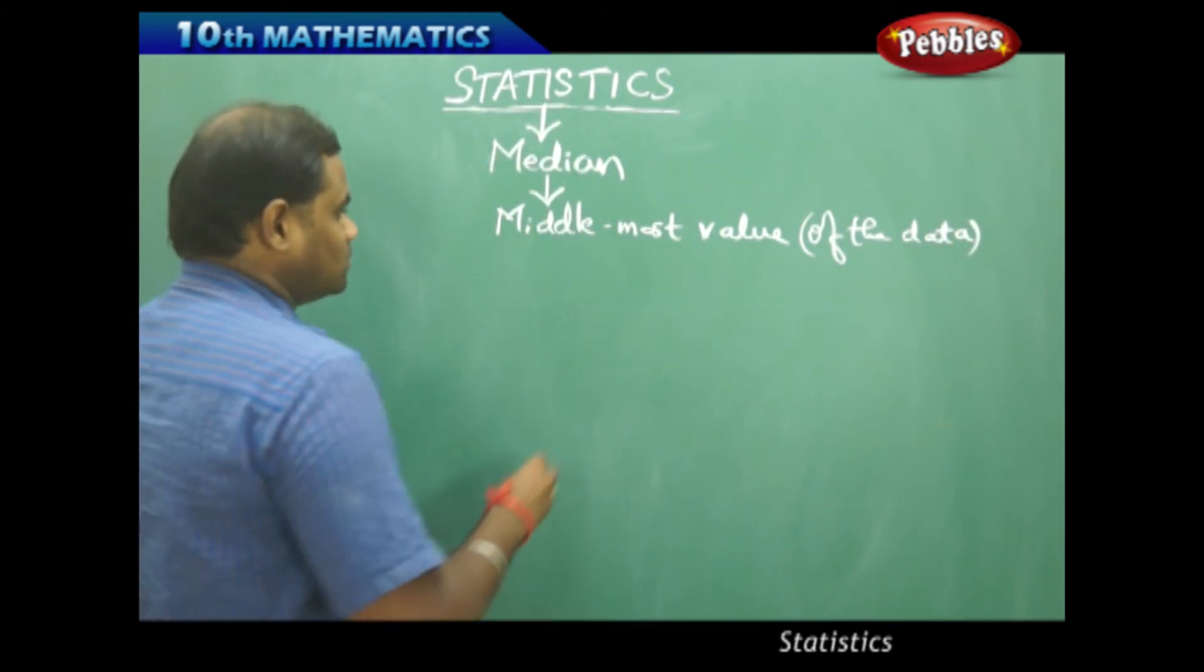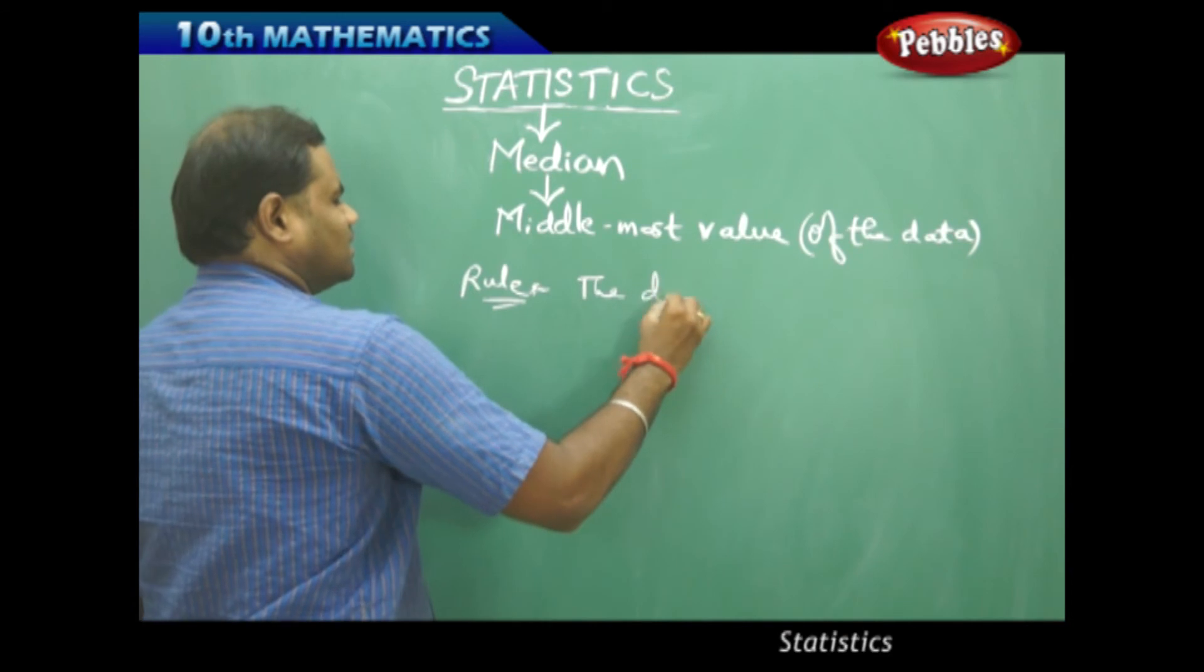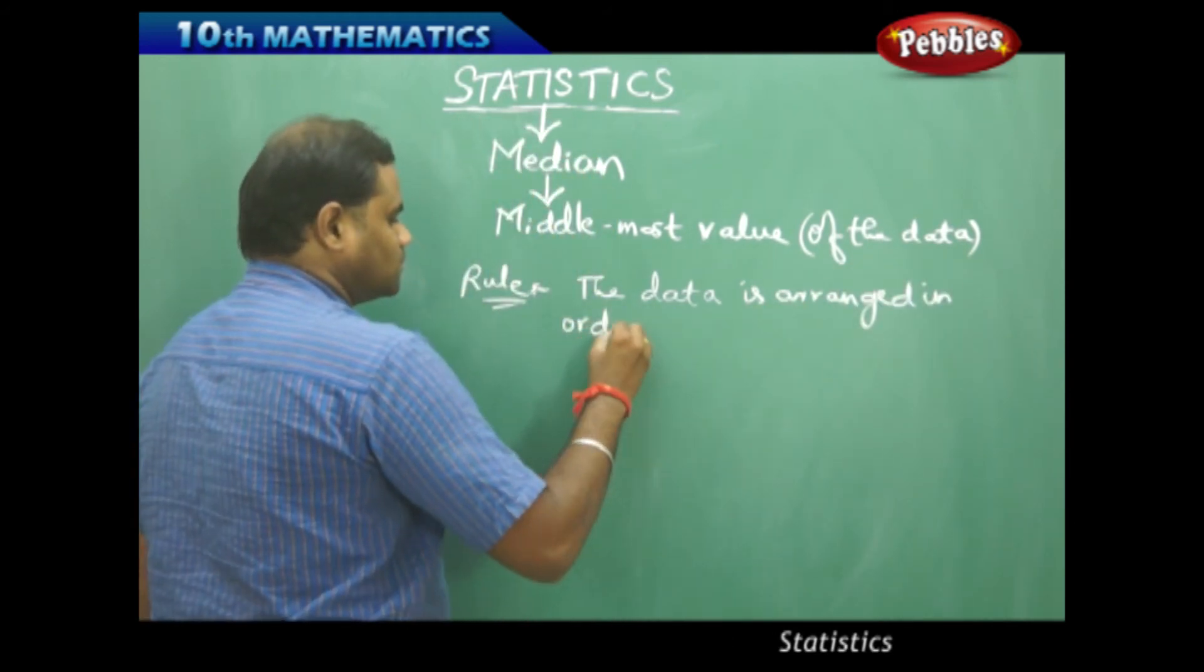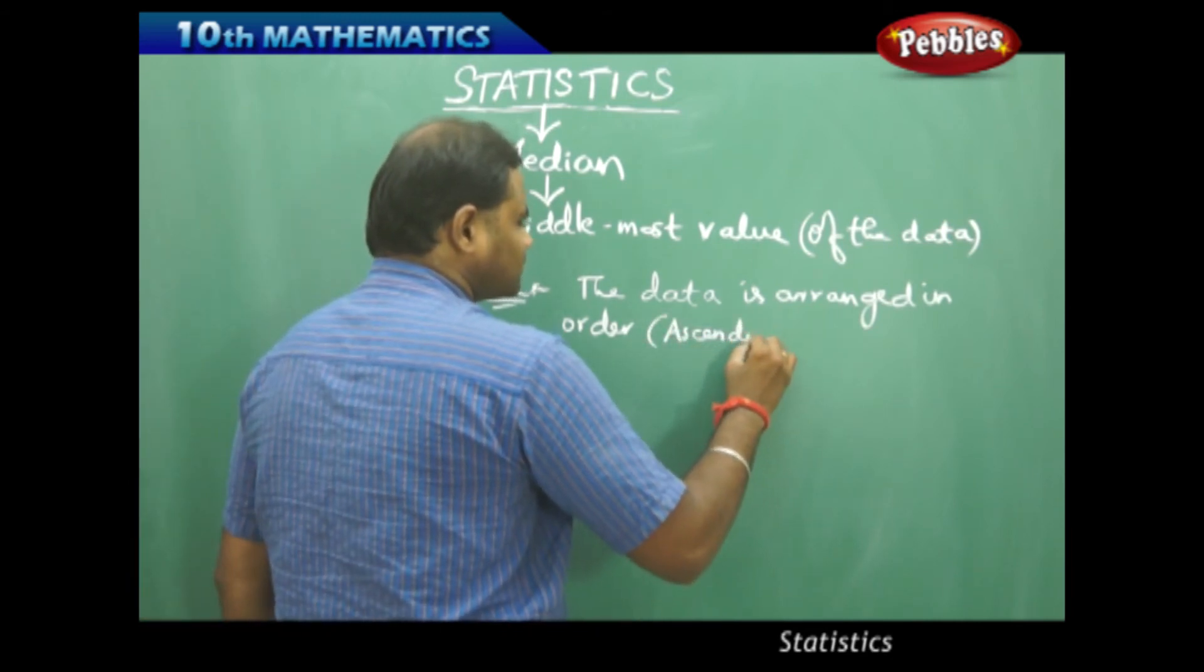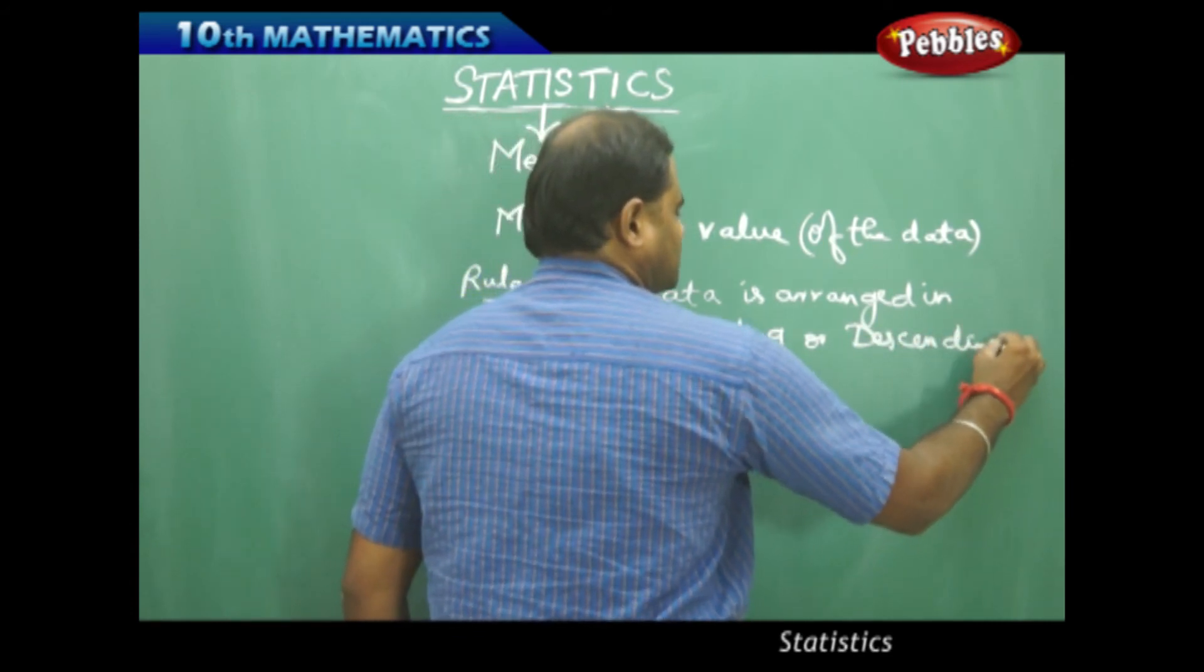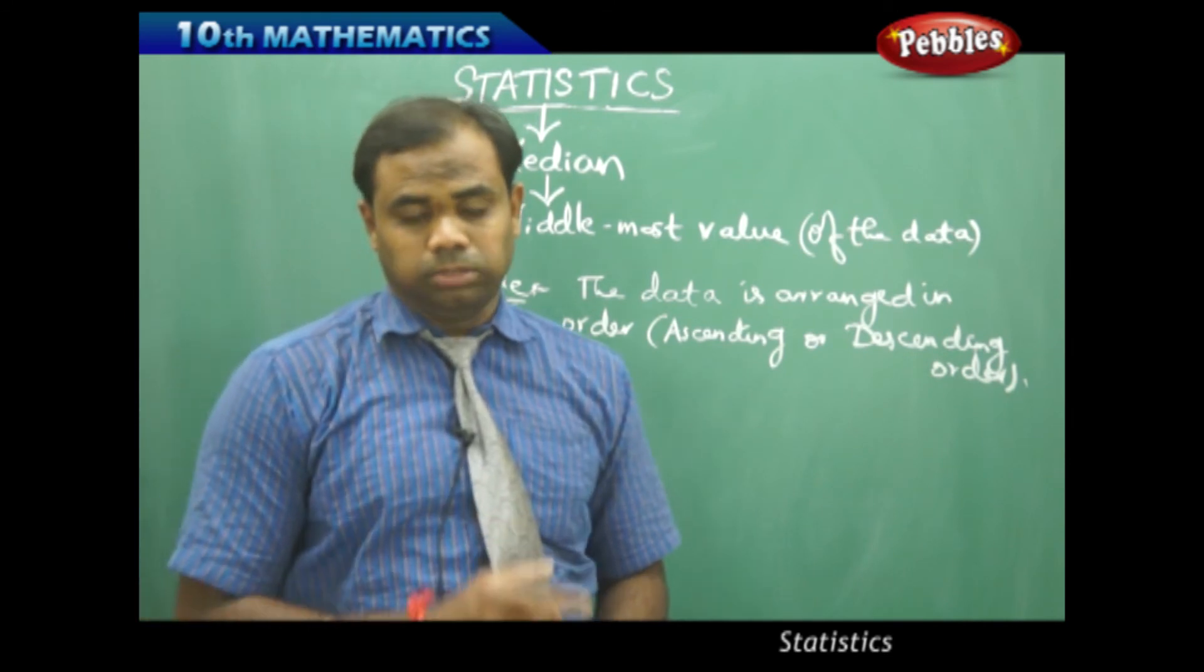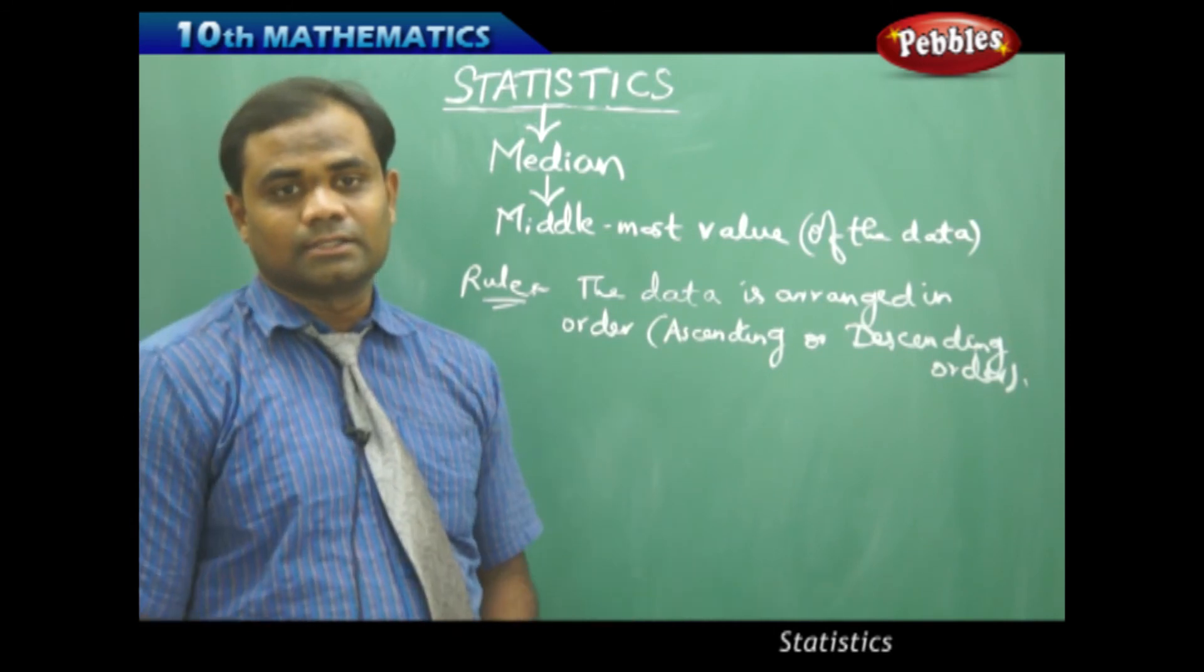Of course, the rule here is that we take the data or observation arranged in order. Generally, we arrange in order, either ascending or descending order. The first and foremost rule of identifying the median is initially the data being arranged in ascending or descending order. Then the middle most value of the data is nothing but median.